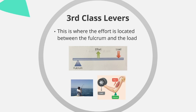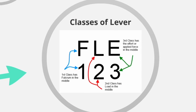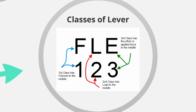The load is provided by the bicep curl and the lower arm itself — so the fulcrum is at one end, the effort is between the fulcrum and the load. That covers the three classes of lever.